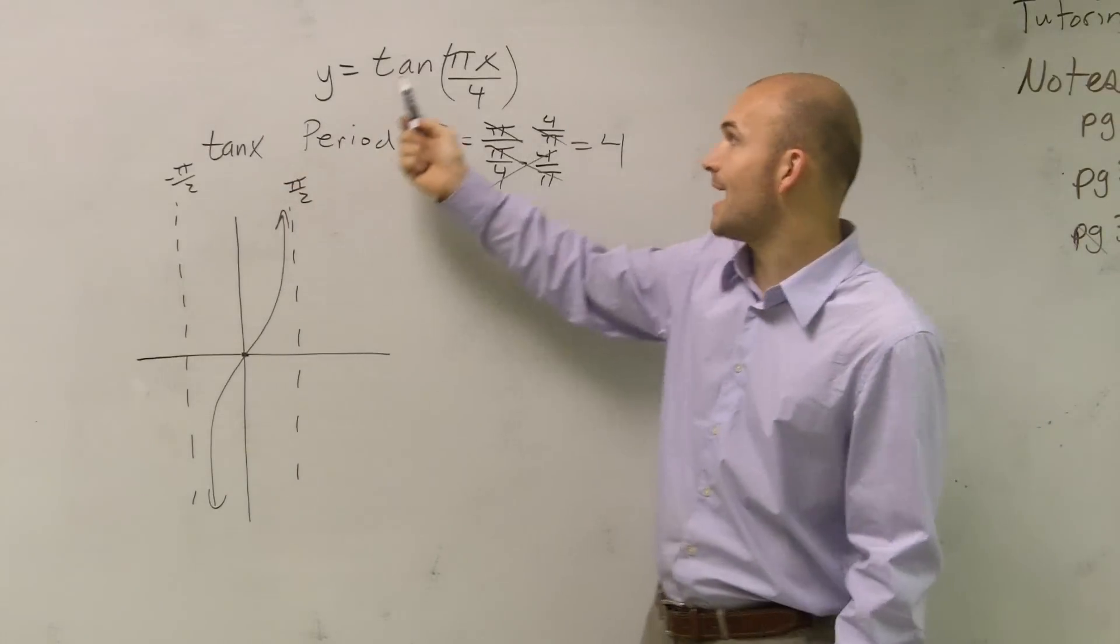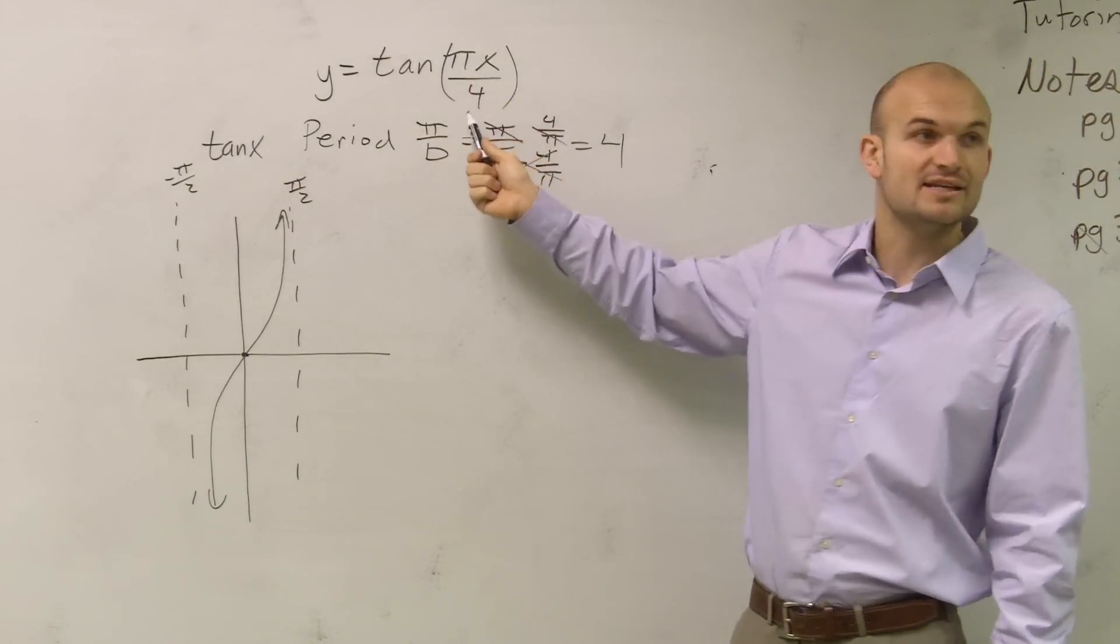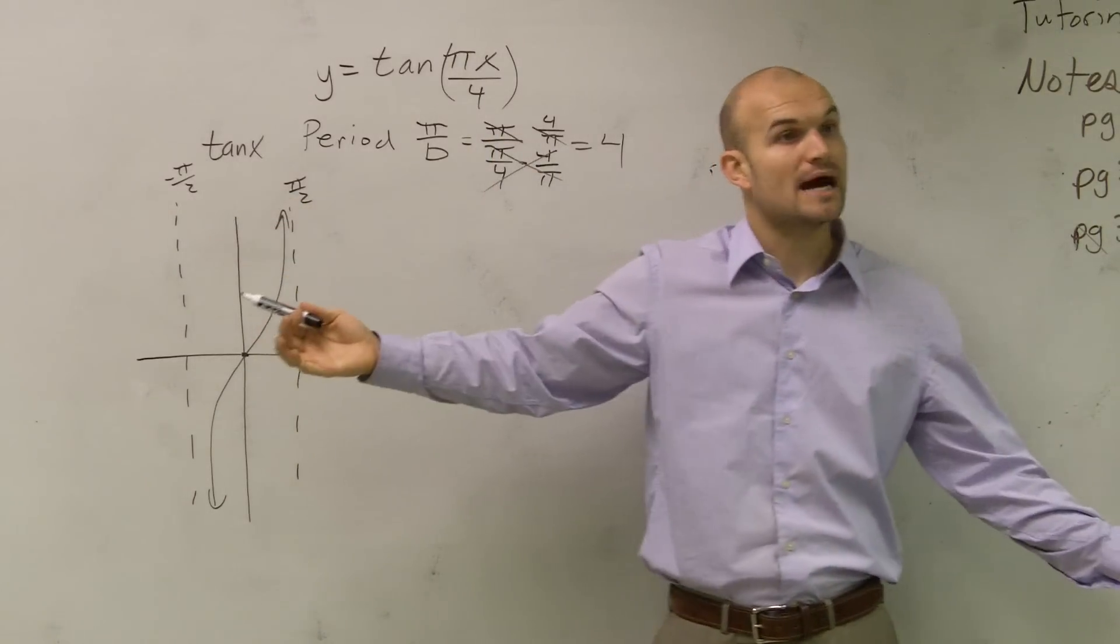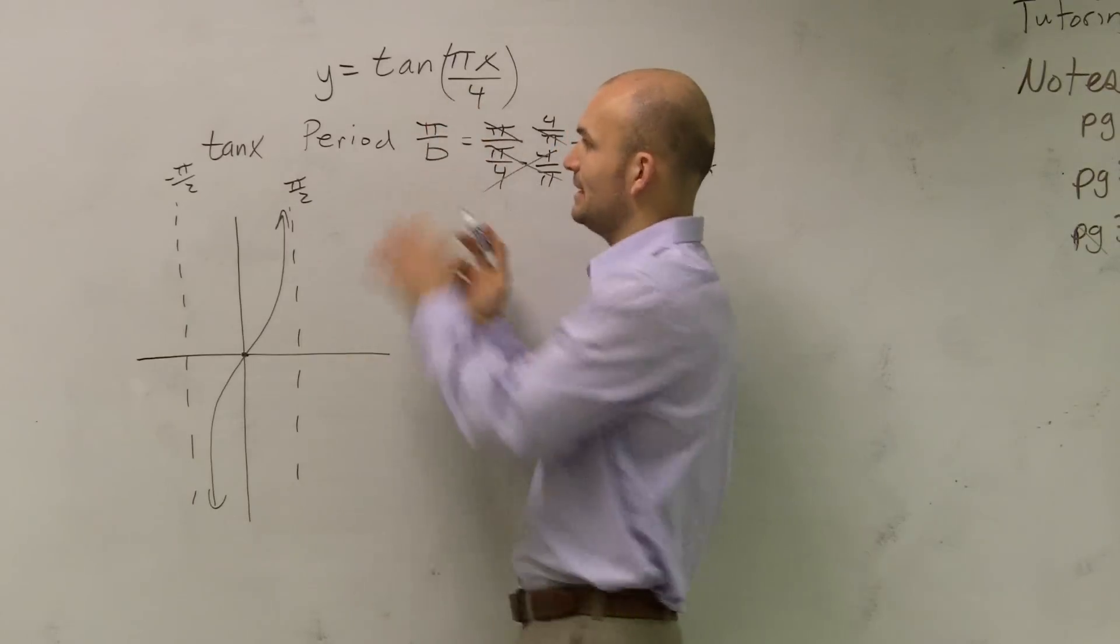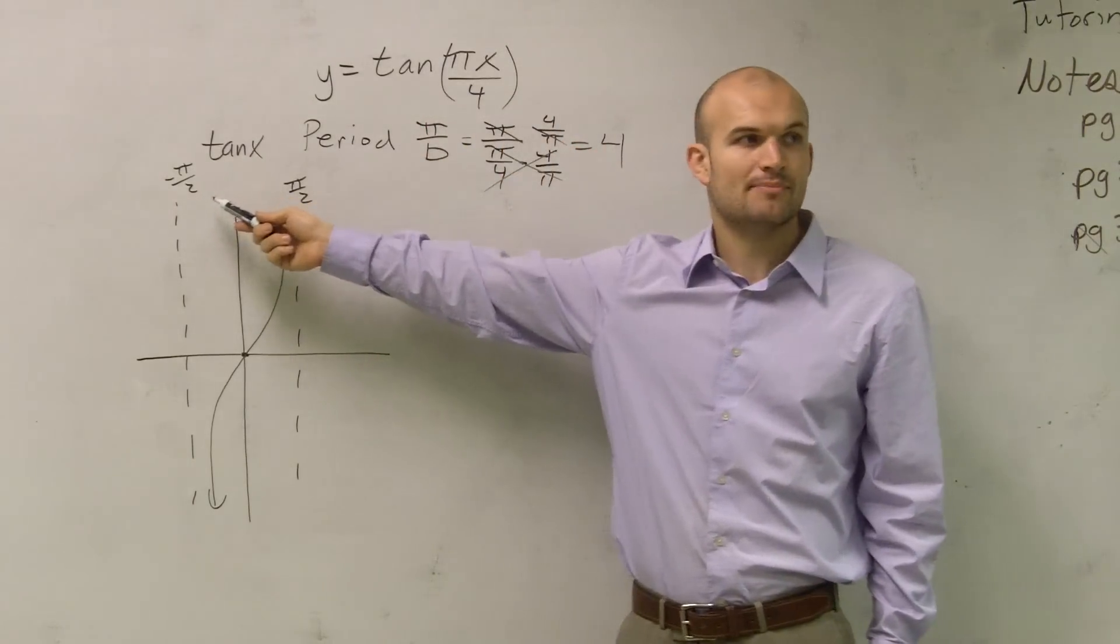If I alter anything inside this function—you can see I'm multiplying by π and dividing by 4—that's going to alter my two asymptotes. To determine how it alters them, we set them equal.